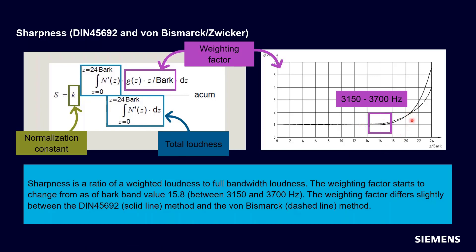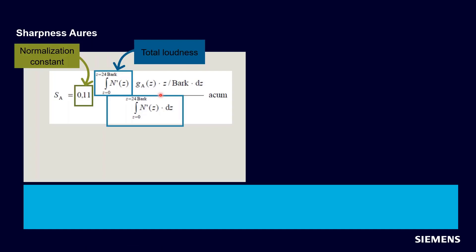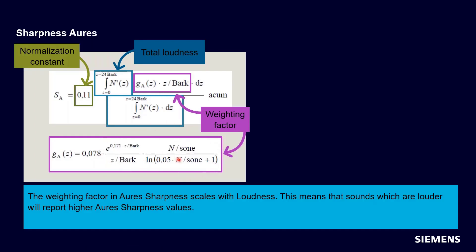Depending on Bismarck or the DIN standard, you would weight that high frequency content slightly differently. There's also Aures's sharpness, which is remarkably similar. You have a normalization constant. You still have the total loudness in the numerator and denominator. You're still multiplying it by a weighting factor. But this weighting factor is now a function of loudness. And so what Aures is saying is as a given signal with its high frequency content, as that signal itself gets louder and louder, I perceive more and more sharpness. And so his weighting factor is actually a function of the loudness. So the louder a sound gets, the more sharp it will calculate using Aures's calculation.